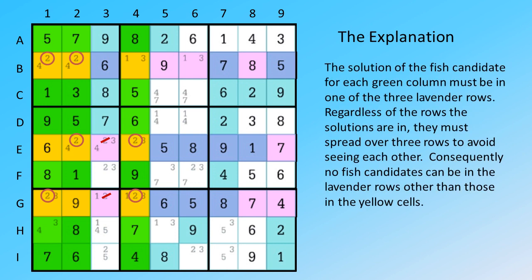The solution of the fish candidate for each green column must be in one of the three lavender rows. Regardless of the rows the solutions are in, they must spread over three rows to avoid seeming in each other. Consequently no fish candidates can be in the lavender rows other than those in the yellow cells.